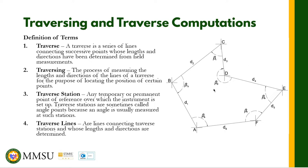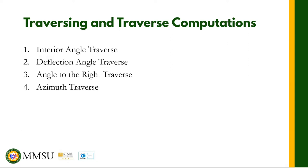For our lesson, we are going to talk about four different types of traversing and traverse computations. Number one, we have the interior angle traverse. Number two, deflection angle traverse. Three, we have angle to the right traverse. And number four, azimuth traverse. This video is specifically made for interior angle traverse. For the succeeding videos, we are going to talk about each of the other traverses as well.